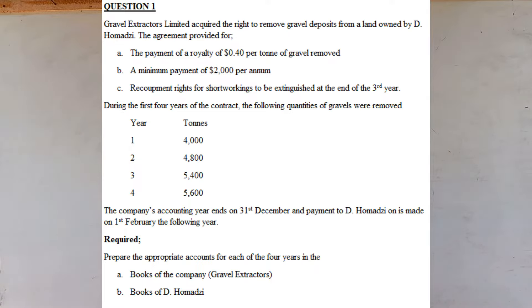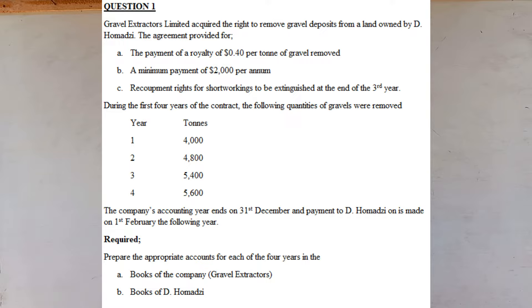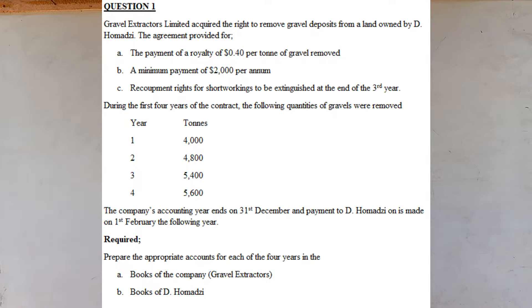Gravel Extractors Limited acquired the rights to remove gravel deposits from a land owned by D. Homaji. The agreement provided for: A, the payment of a royalty of 40 cents per ton of gravel removed; B, a minimum payment of $2,000 per annum; C, recoupment rights for short workings to be extinguished at the end of the third year. During the first four years of the contract, the following quantities of gravel were removed.